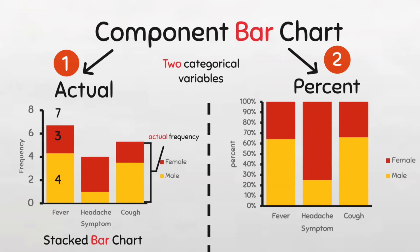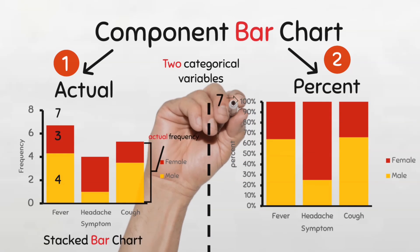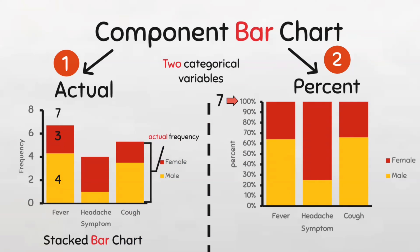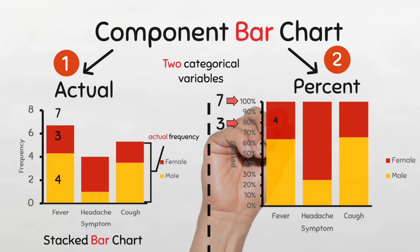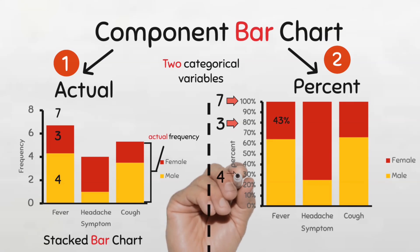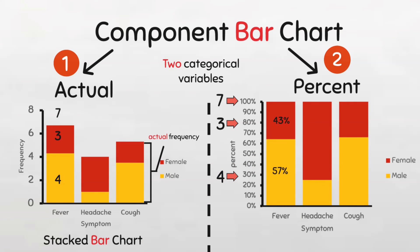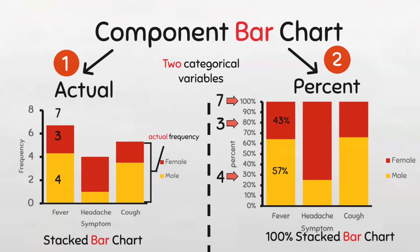On the other hand, in the percentage component bar chart, the length of the individual components represent the percentage of each component from the overall total of each category. Notice that all the bars are of the same length and they are all 100%. So in this example, with the same data as the previous example, we know that there were seven individuals with fever. For the percent bar chart, this seven is converted to 100%. And if seven is 100%, and we know three out of seven were females, this will be three divided by seven times a hundred, which is 43%. And for the males that are four out of seven individuals with fever, this will approximately be 57%. So the actual values are not represented, but the percentage of the total for each category. The size of each component is the proportion of the total. This type is also called a 100% stacked bar chart because all the components are stacked up to 100%.